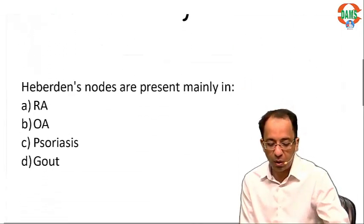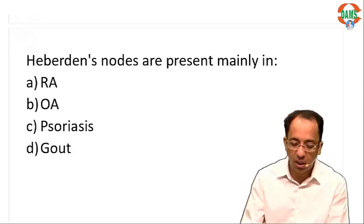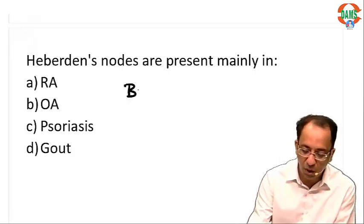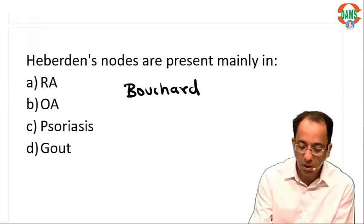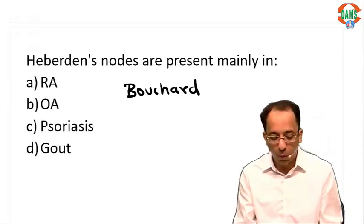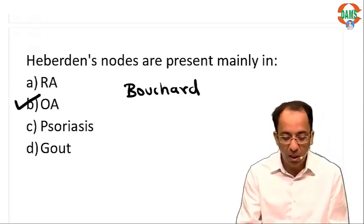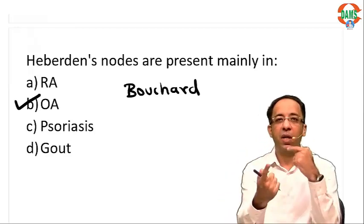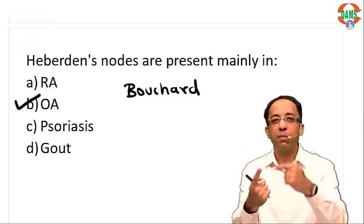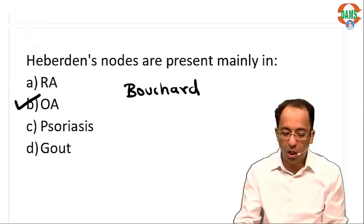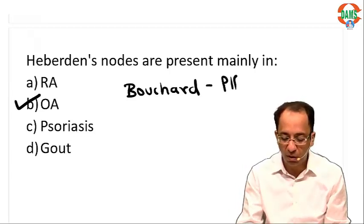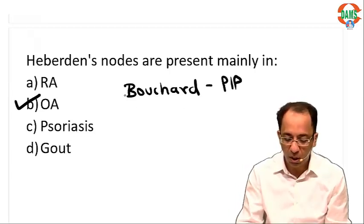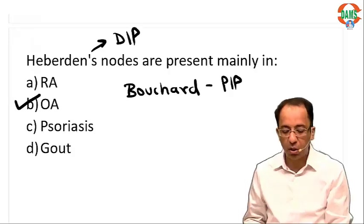The second question asks where Heberden nodes are seen. There are only two nodes to remember: Bouchard nodes and Heberden nodes — both are seen in osteoarthritis. The mnemonic is alphabetical: B comes before H, so Bouchard nodes are at the proximal interphalangeal joint and Heberden nodes are at the distal interphalangeal joint.